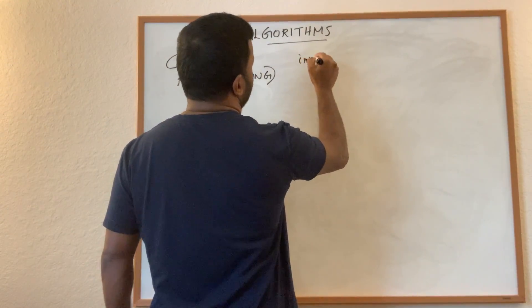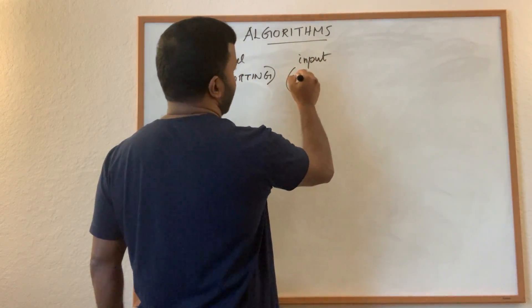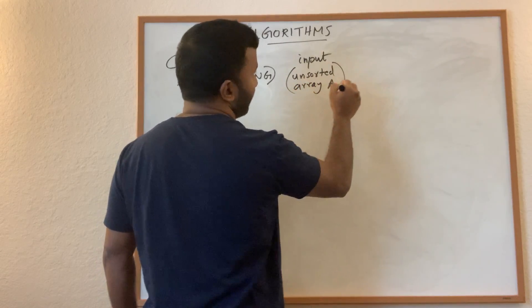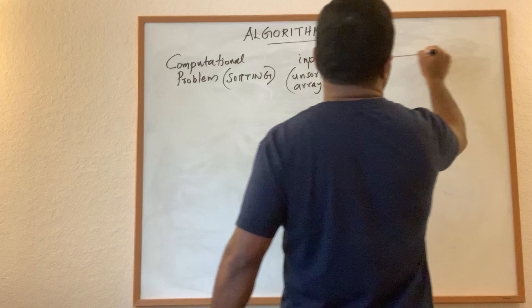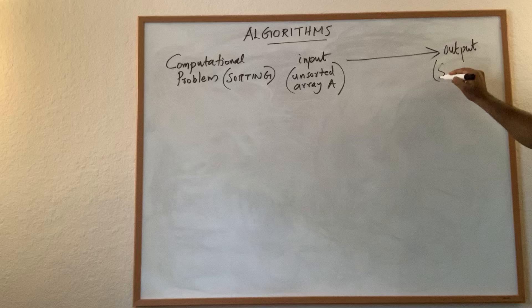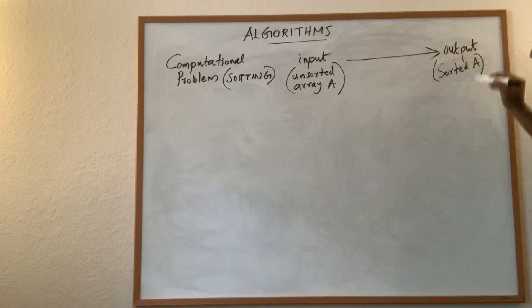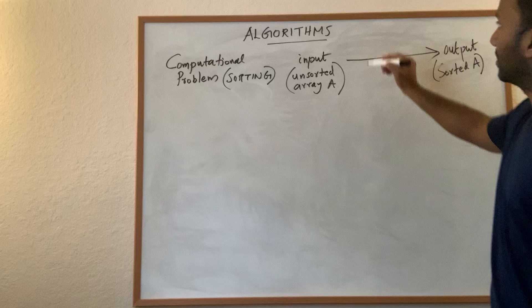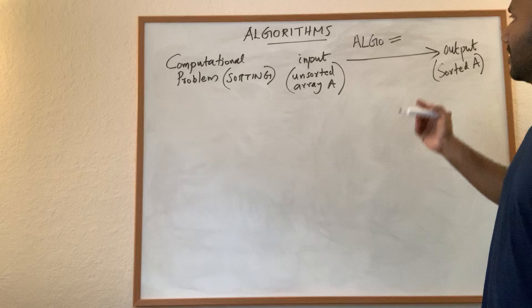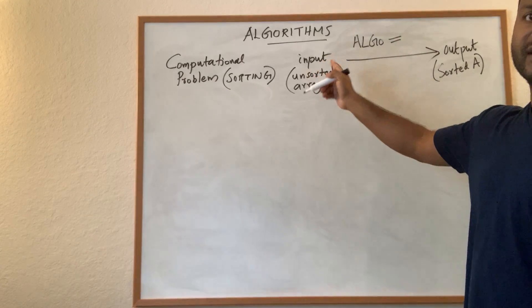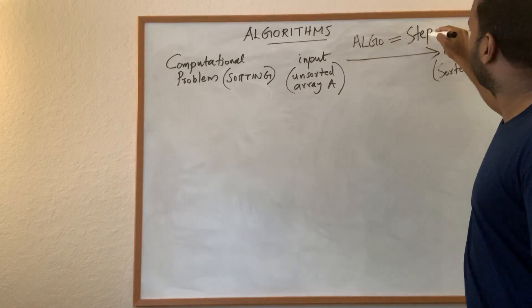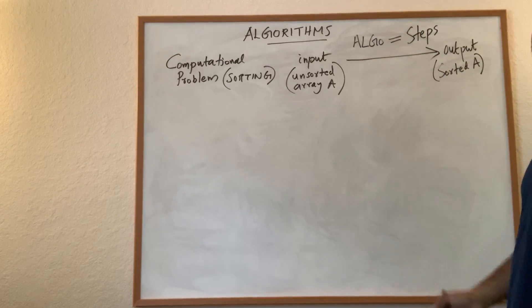There is going to be an input, in this case it is an unsorted array, let's say A. And the output is simply the array after sorting. And the algorithm is a bunch of well-defined steps which we need to perform on the input so that we will get the correct output. So simply speaking, algorithm is a bunch of steps.